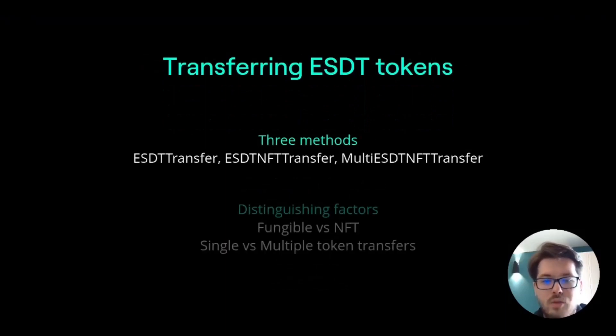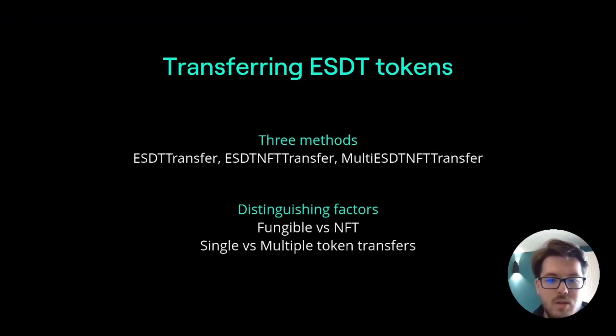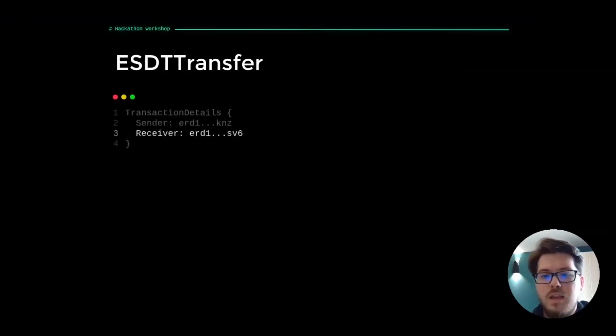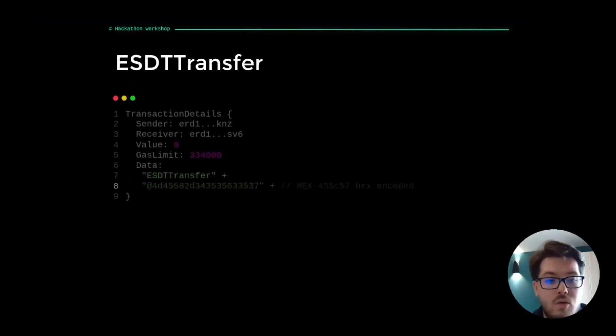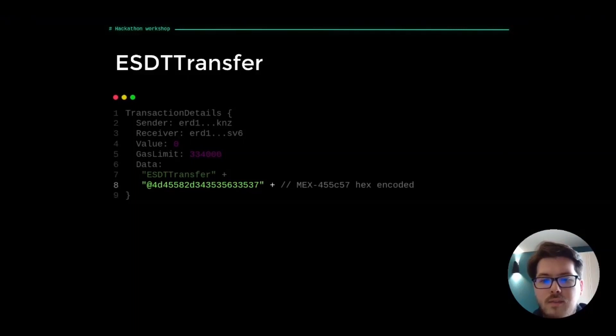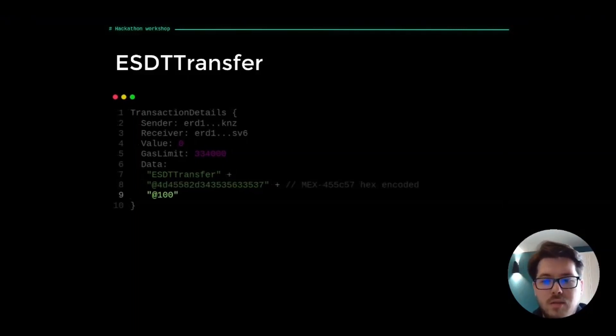Transferring ESDT tokens is done using three built-in functions. You can choose which one fits best depending on the type of token or how many tokens are being transferred at the same time. Let's start with the ESDT transfer: specify the sender and receiver, set the EGLD transfer value to zero and set the required gas limit. In the data field, specify the built-in function name followed by the token identifier hex encoded, then indicate the amount to be sent, denominated and hex encoded.